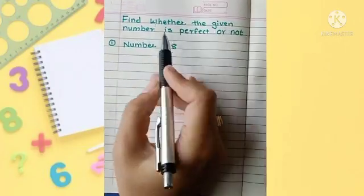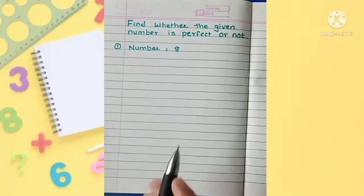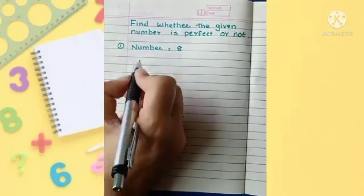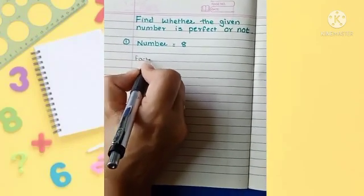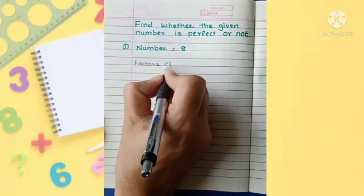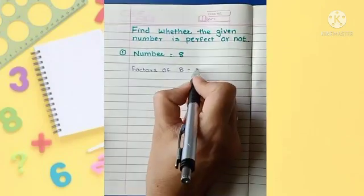Today we will see how to find whether the given number is perfect or not. Let's see number 8. As we know, we have to write down all the factors of 8, and the factors of 8 are 1,